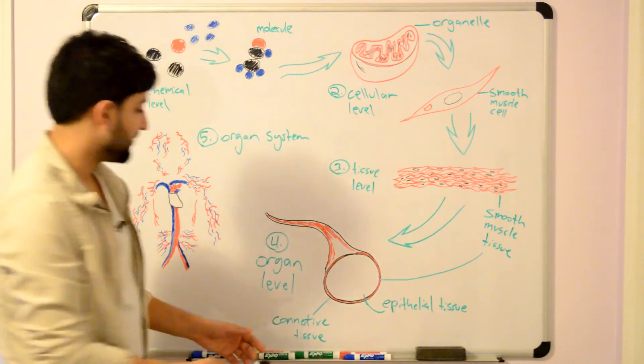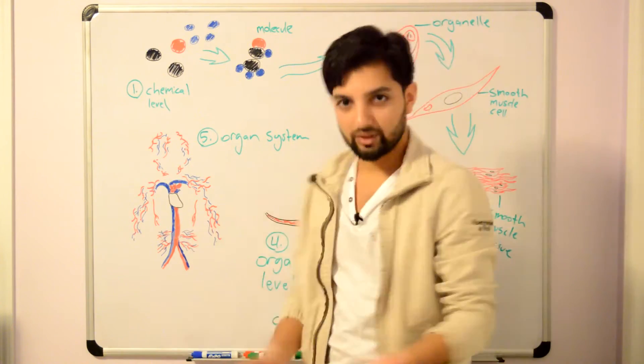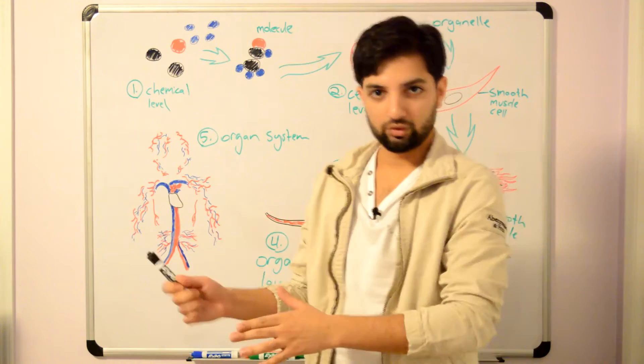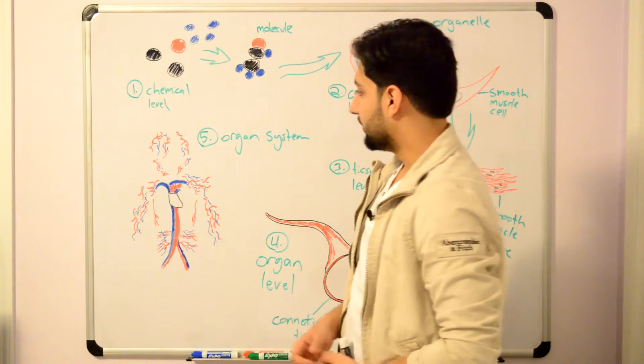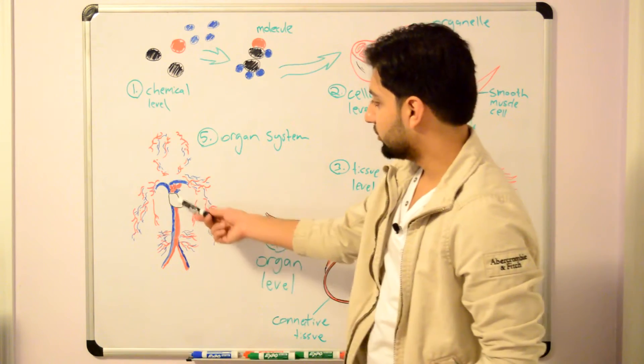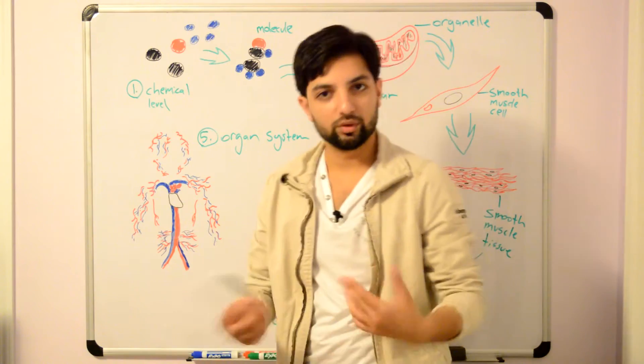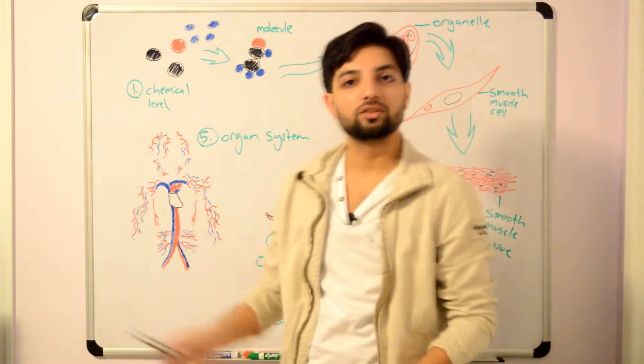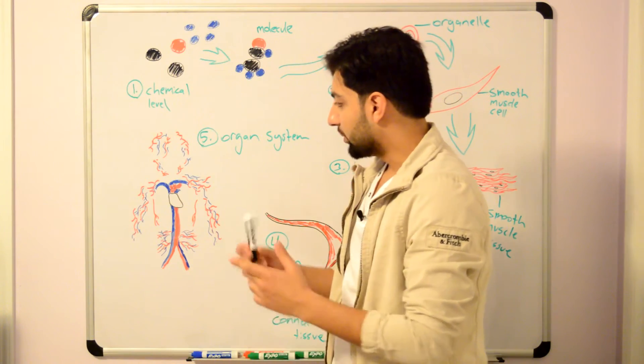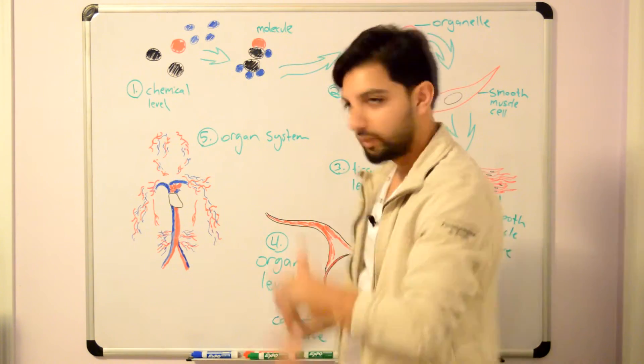Continuing on, you have the organ system level. As we said, an organ has to be two or more tissues. An organ system has to be two or more organs working together. In this case, you have the heart and blood vessels working together to form an organ system—the cardiovascular system. The heart and blood vessels perform a very specific function, which is to carry oxygen and nutrients throughout the body.